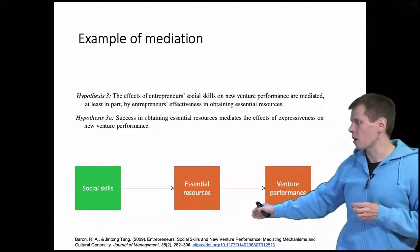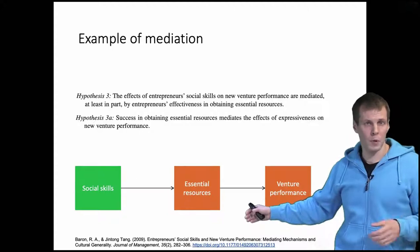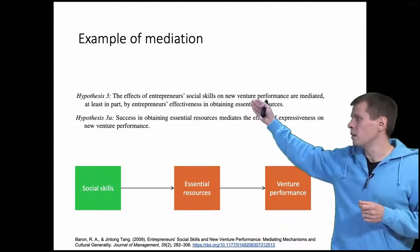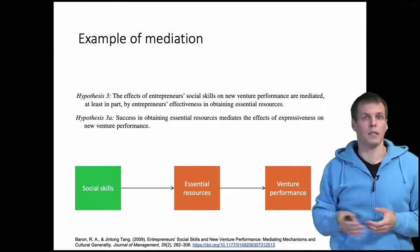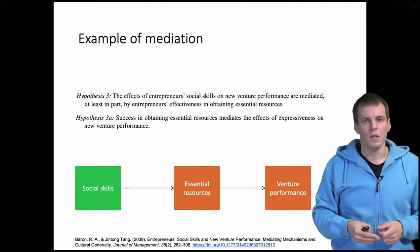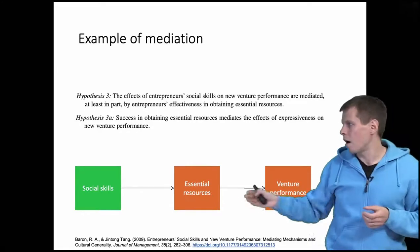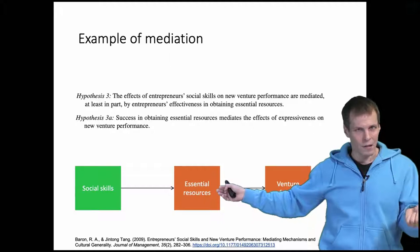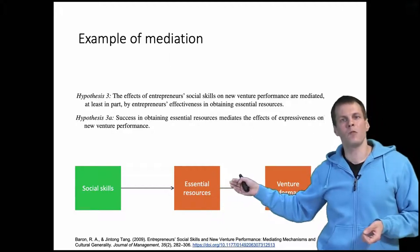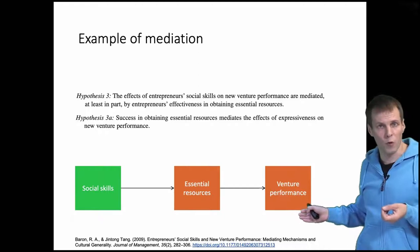Let's take a look at mediation in our example article, Barron and Tang. They have a hypothesis or multiple hypotheses. One of them is hypothesis 3, and then hypothesis 3a is simply a more precise variant of hypothesis 3. So they're basically saying that entrepreneurs with good social skills are better at gathering essential resources, and if you have more essential resources, then that allows your venture to perform better.